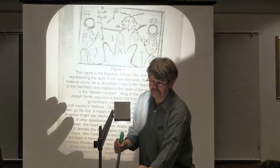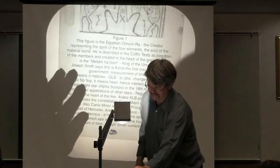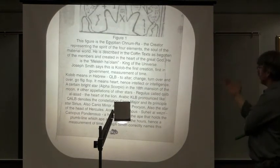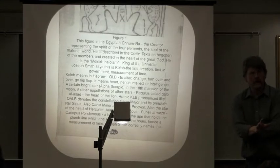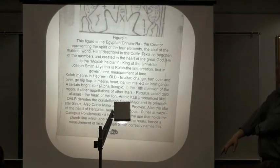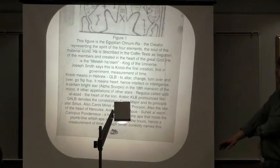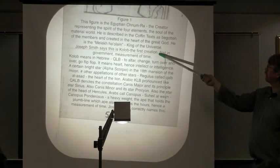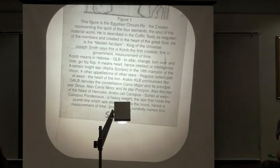Now, here's this figure close-up. This is so fun. This figure is the Egyptian Khnum. He's the creator. He represents the spirit of the four elements. He is the soul of the material world. He is represented in the Coven texts as begotten of the members and created in the heart of the great God. He is the Melech HaOlam. He is the king of the universe. Joseph Smith said, This is Kolob, the first creation. First in government. First in the measurement of time.